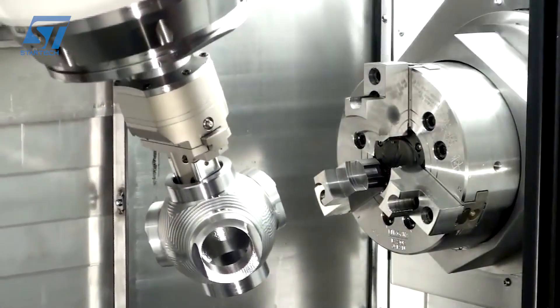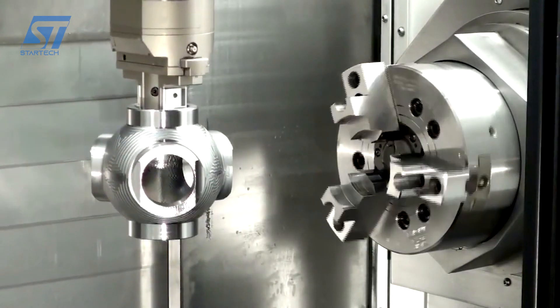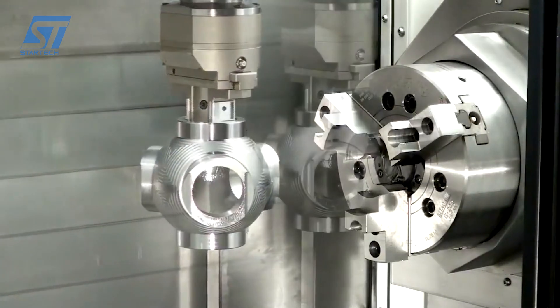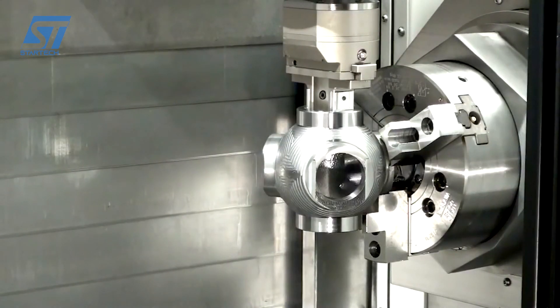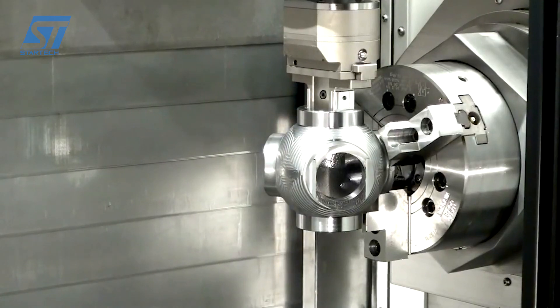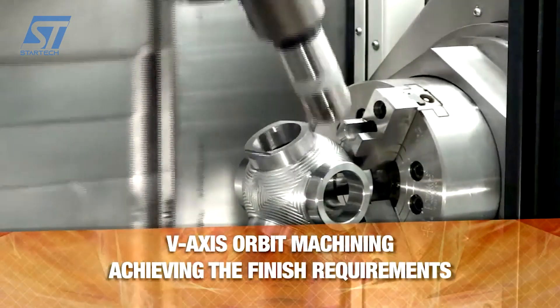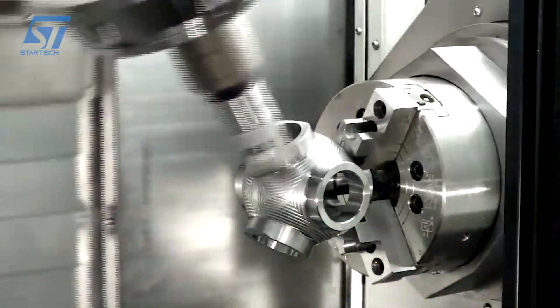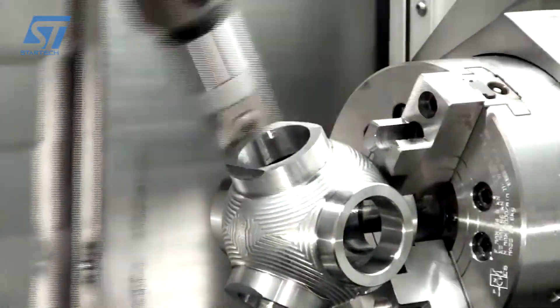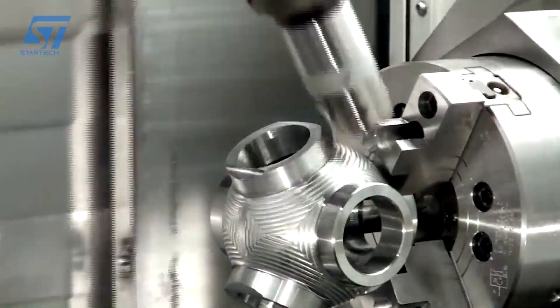The i200S is a highly versatile and productive multitasking turning center that enables complete machining of complex parts in a single setup. Its twin spindles, powerful milling spindle, and advanced CNC control make it a valuable asset for manufacturers seeking to improve efficiency, accuracy, and profitability.